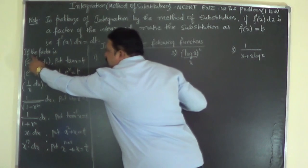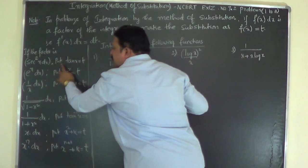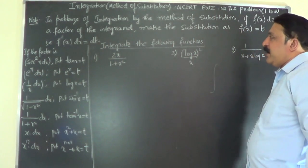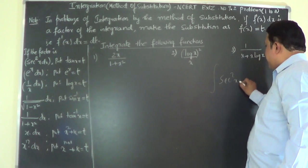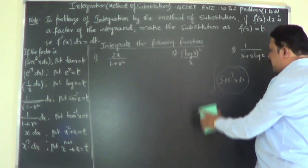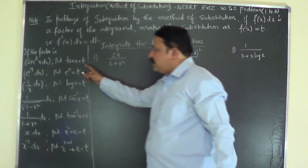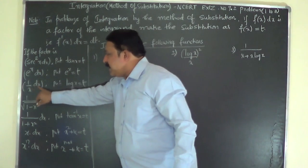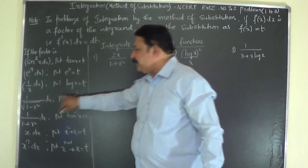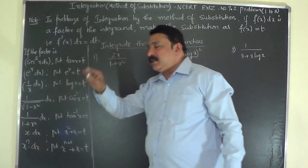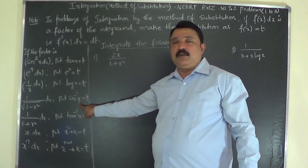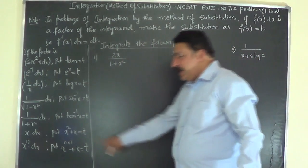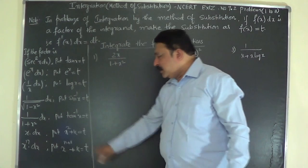Here are the common substitutions: if sec²x dx is a factor, put tan x = t. If eˣ dx is present, put eˣ = t. If 1/x dx is present, put log x = t. If 1/√(1−x²) dx is present, put sin⁻¹x = t. If 1/(1+x²) dx is present, put tan⁻¹x = t. And if x dx is present as a component, put x² plus some constant equal to t.